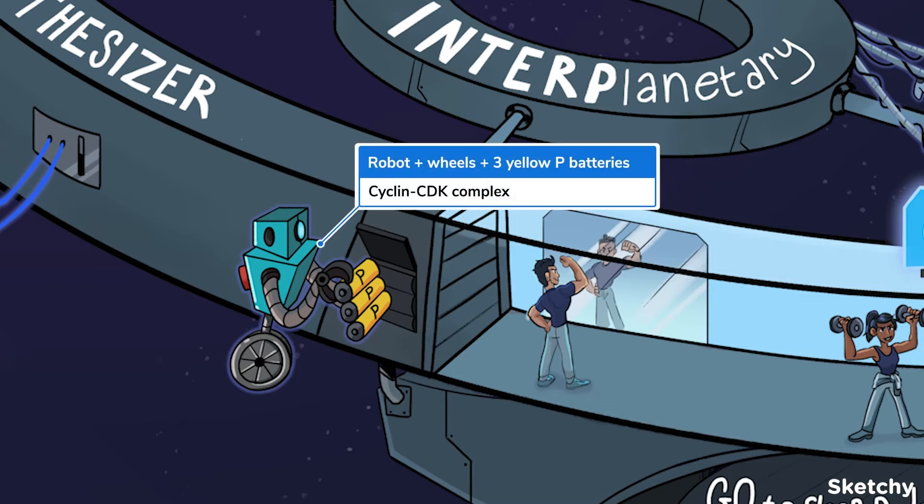CDKs specifically bind to cyclins, generating activated cyclin-CDK complexes. This is depicted by the robot on cycling wheels, inserting a set of P batteries into the slot to open the door. So these cyclin-CDK complexes alter downstream proteins via phosphorylation, which in turn allow the cell to move from one stage to the next.